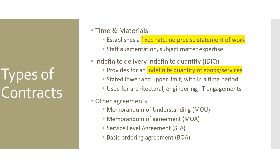The third type of contract is Time and Materials (T&M), which establishes a fixed rate for a particular skill set or competency without a precise scope of work. It is perfectly suited for staff augmentation, subject matter expertise, and adopting agile methods like Scrum — since in agile the scope is flexible, T&M is preferred over fixed price.